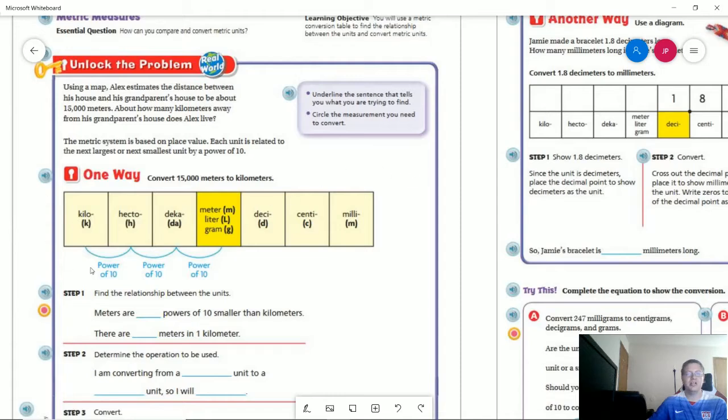This particular chart is going to be a huge help to us as we work through the lesson and as we do the homework. So this is our base. For distance it would be a meter, for capacity or volume it would be the liter, and for weight or mass it would be a gram.